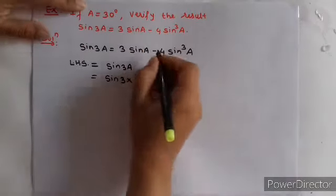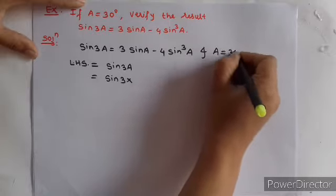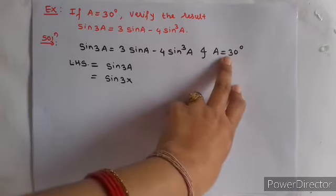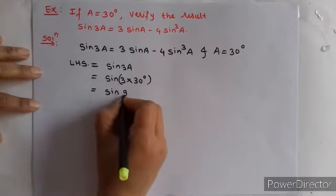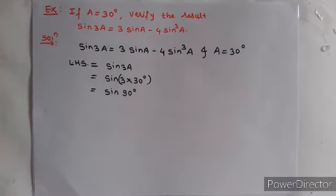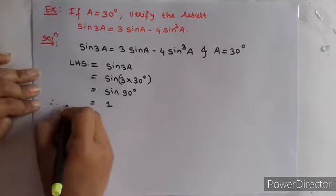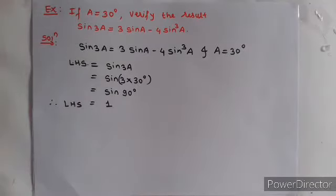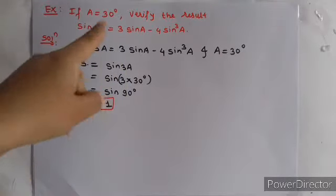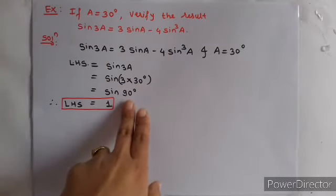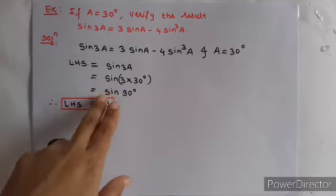We solve sin 3a. Given: a equals 30 degrees. So we substitute 30 degrees for a. Sin 3 into 30 equals sin 90 degrees. What is the value of sin 90? Sin 90 equals 1. So therefore, left hand side equals 1. We solved LHS by substituting a equals 30 degrees, multiplying to get 90 degrees, and using sin 90 equals 1.